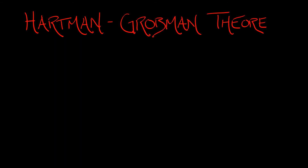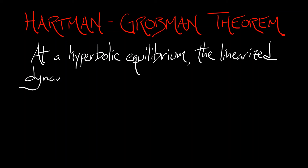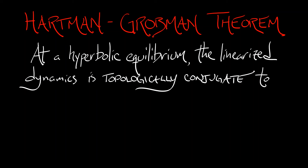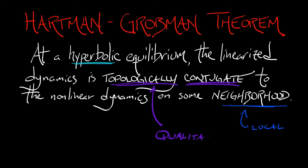And that's really all we need. The Hartman-Grobman theorem goes through just the same as in volume two. Here's the statement: at a hyperbolic equilibrium, the linearized dynamics is topologically conjugate to the nonlinear dynamics on some neighborhood. The key points: you need a hyperbolic equilibrium — no neutral eigenvalues — but once you've got that, you have a local result that tells you qualitatively the dynamics are the same. That's what we mean by topologically conjugate.